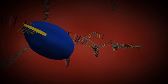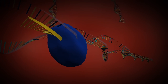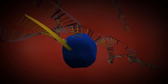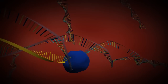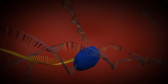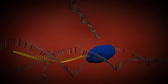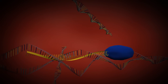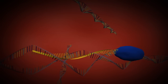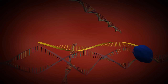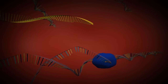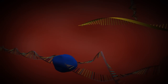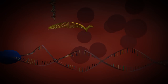A blue molecule races along the DNA. It is RNA polymerase, an enzyme that reads the nucleotide sequence of the hemoglobin gene and uses it to build an RNA copy of the gene. The product of transcription, messenger RNA, is represented in this animation as a yellow chain emerging from the RNA polymerase. The RNA copy of the gene will now carry the instructions for building hemoglobin to the cytosol.